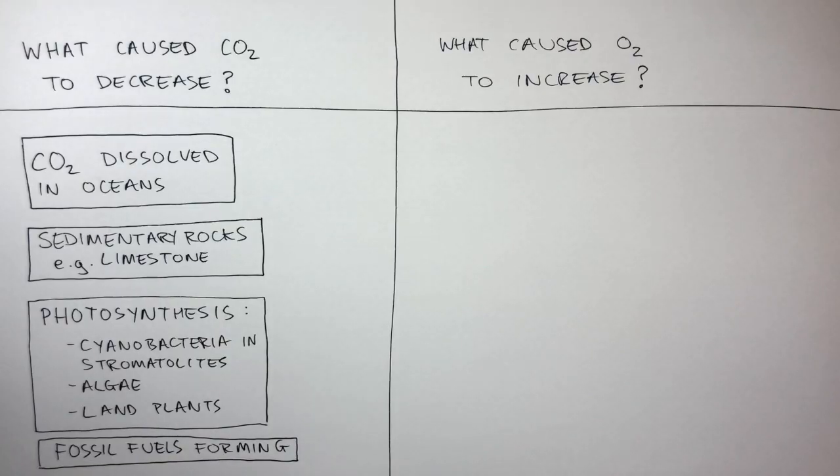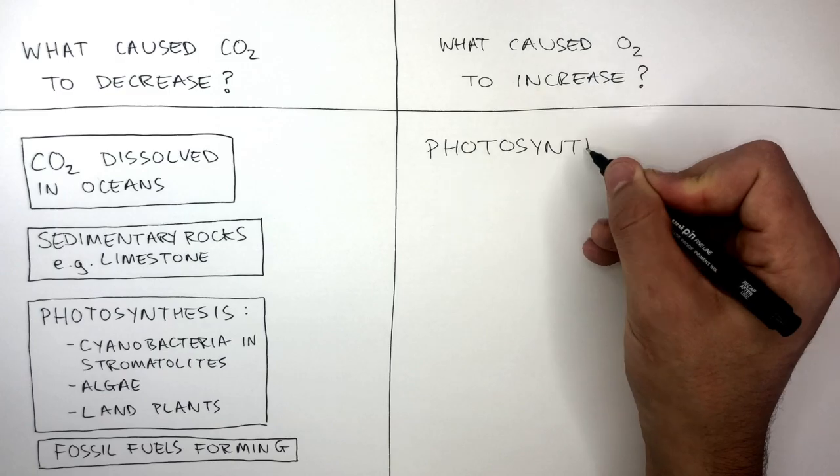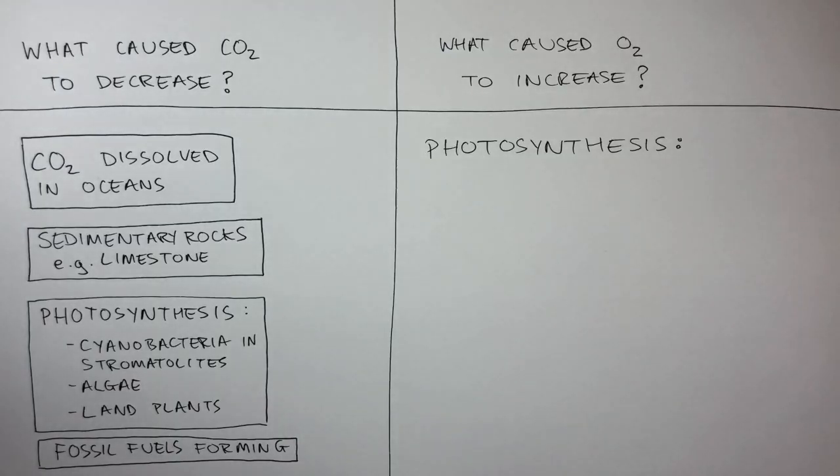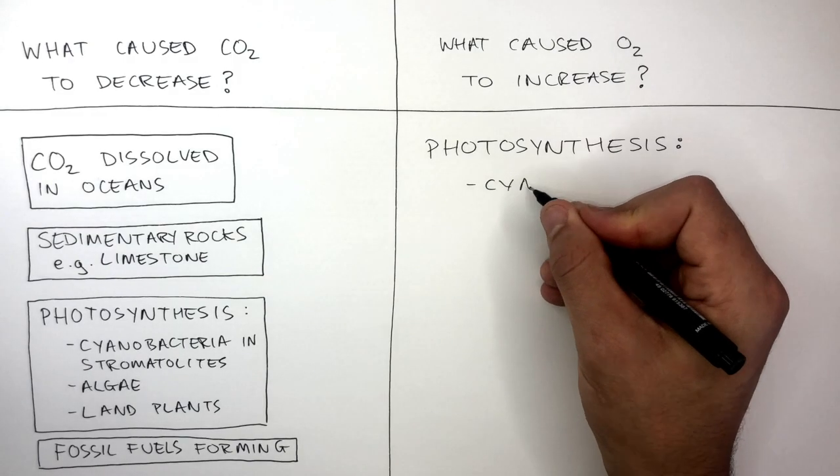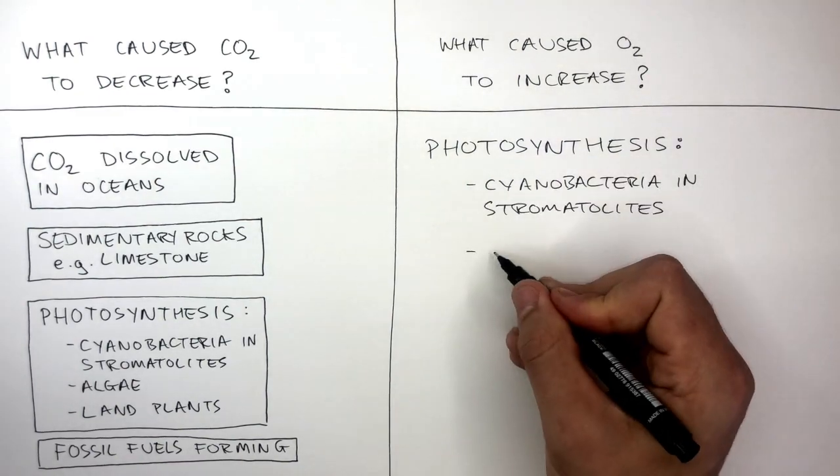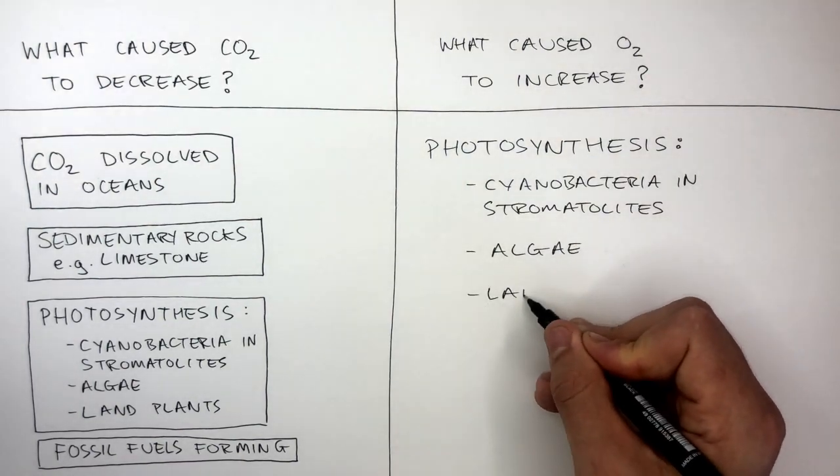And what caused oxygen levels to increase in Earth's atmosphere? Well, there's one major reason and that's photosynthesis. The organisms responsible for photosynthesis were cyanobacteria and stromatolites, algae, and land plants.